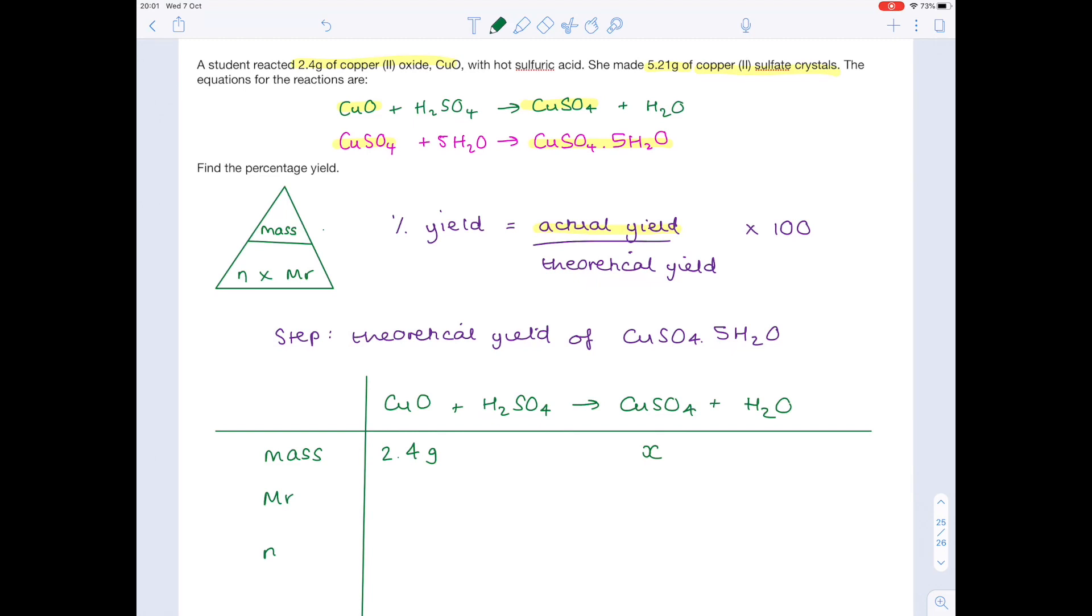Now we're ready to go. Use your periodic table to find out the Mr of copper oxide. The mass of copper is 63.5, the mass of oxygen is 16, therefore the Mr of copper oxide is 79.5 grams. Our number of moles we can find out using this formula triangle, so number of moles is mass divided by Mr. Just do 2.4 divided by 79.5 grams to get 0.0301886. Remember, not to round too soon.